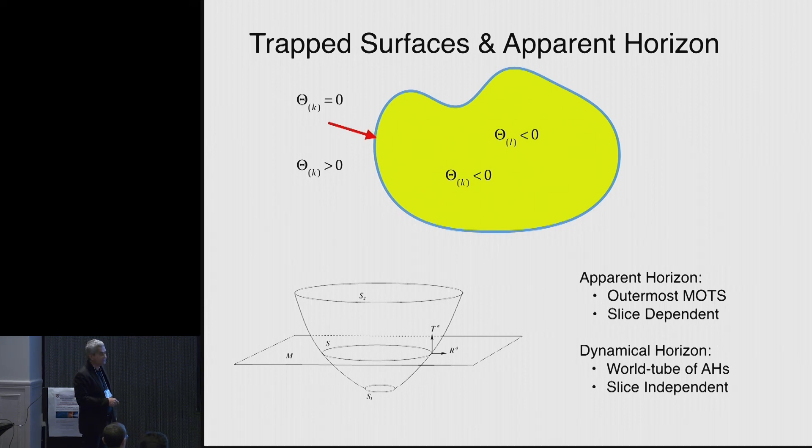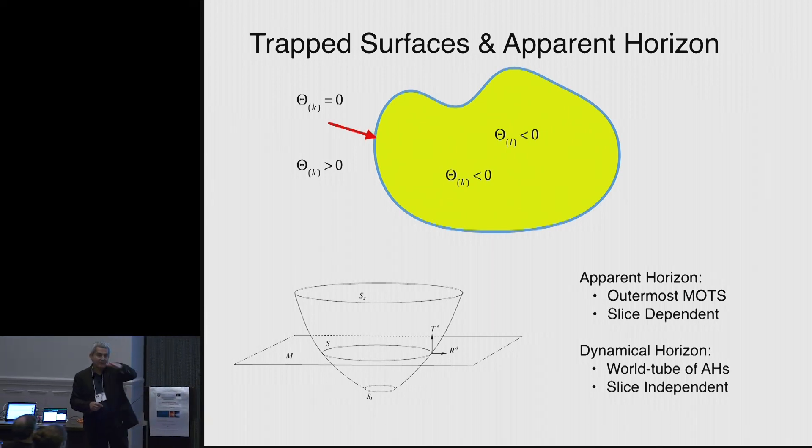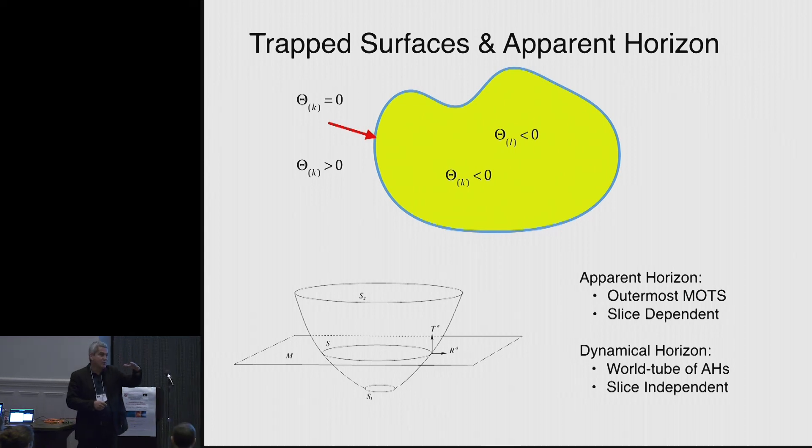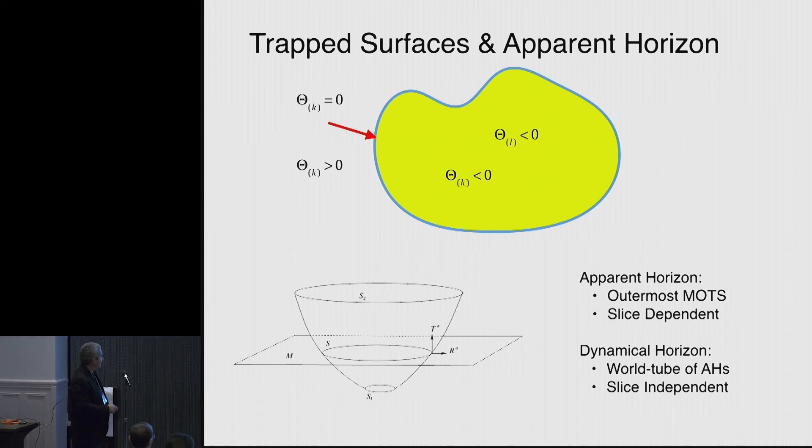Now, these apparent horizons are slice-dependent. As you imagine, if you slice the space-time in a different way, you can have a different shape of the horizon or you can even lose the horizon. However, once you have the world tube, that can prove that it is slice-independent.